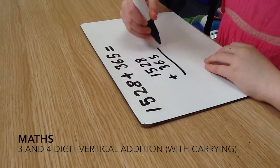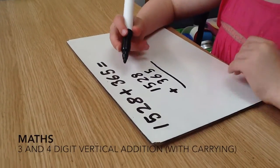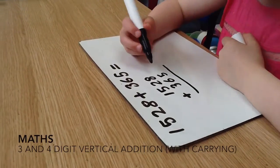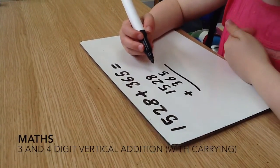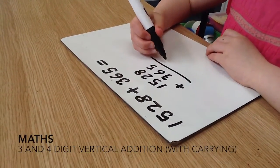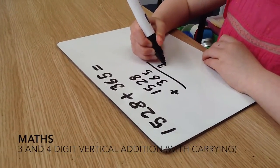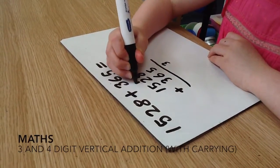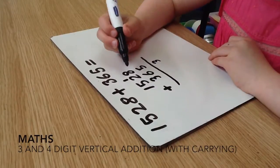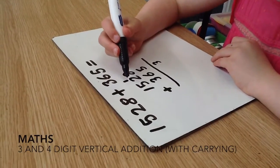Then you put a line and you add up eight and five which is 13, but you're only allowed to keep the three and you have to put the ten here in the ten section. Then you add up ten,